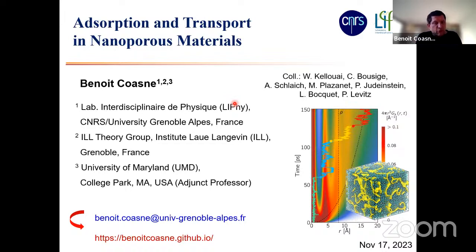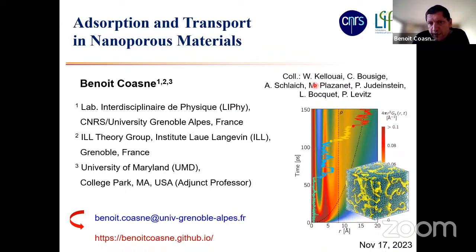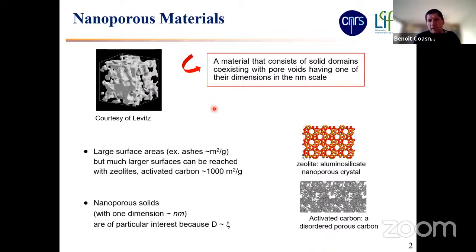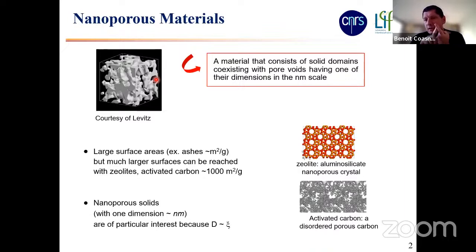I would like to acknowledge my co-workers, especially some students, Vanda and postdocs, Colin and Alex. So what I call a nanoporous material is a system where you have some solid domains in gray that coexist with some pore void in black. By construction, because we call these materials nanoporous materials, that means that one of the pore dimensions, at least, is at the nanometer scale.